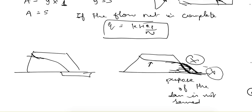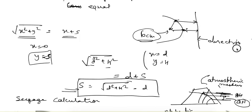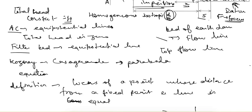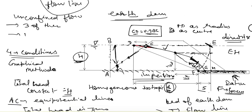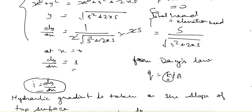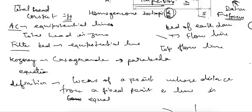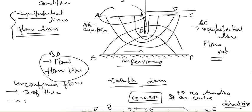That's it for this topic. In the next video, we will see the permeability value k for anisotropic soil.